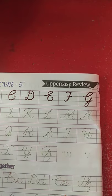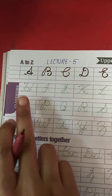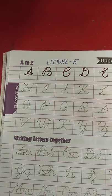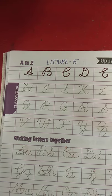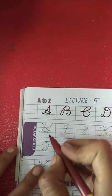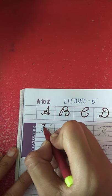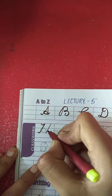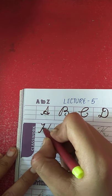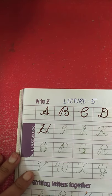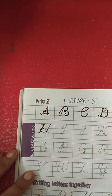G for grapes ke baad kaunsa letter aata hai? Letter H — H for house. What is the spelling of house? H-O-U-S-E. Now put your pencil on the dot and draw a slanting line, one more slanting line, and draw a loop between these two blue lines. This is letter H — H for house.